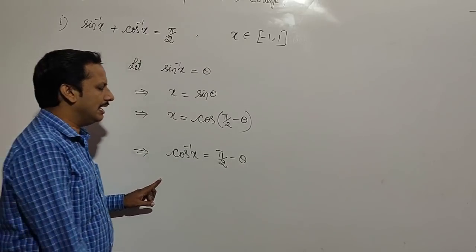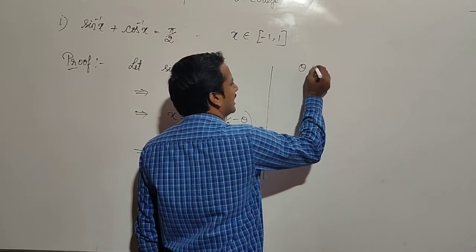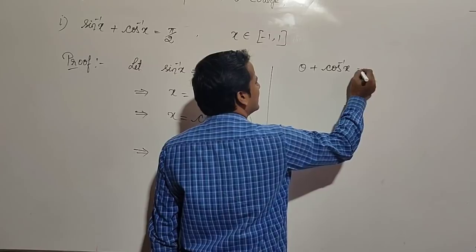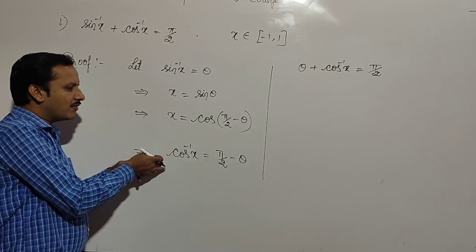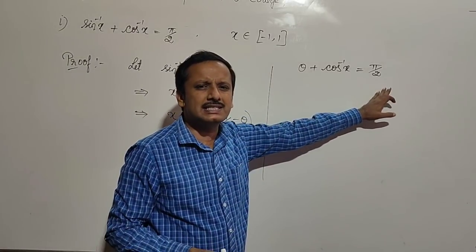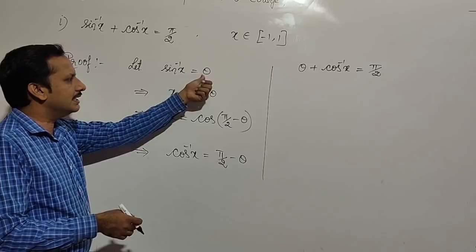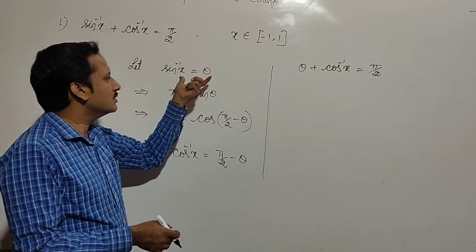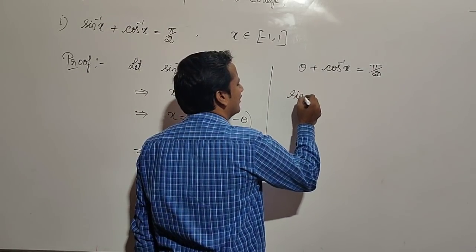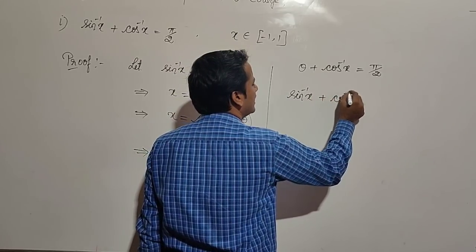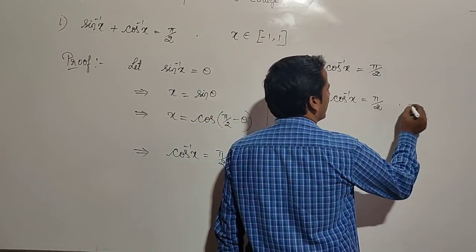Bringing that minus theta to the left-hand side gives us theta plus cos inverse x is equal to pi by 2. Since theta is sin inverse x, substituting that value gives us sin inverse x plus cos inverse x is equal to pi by 2.